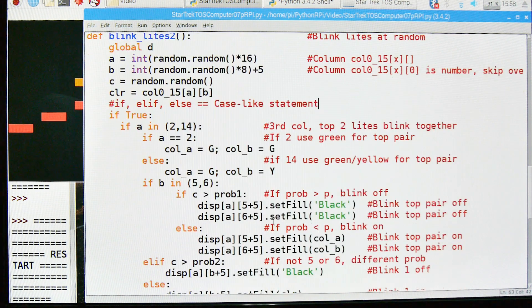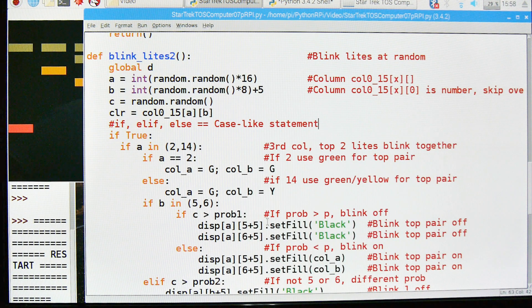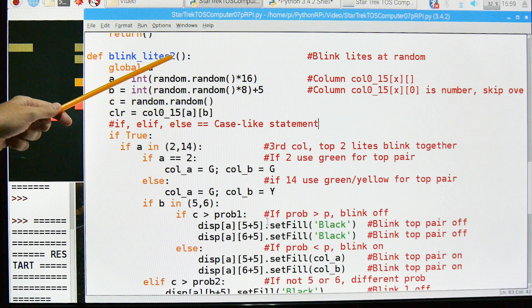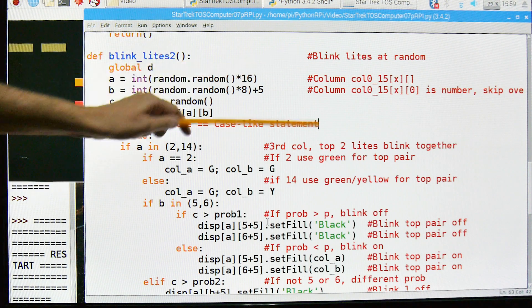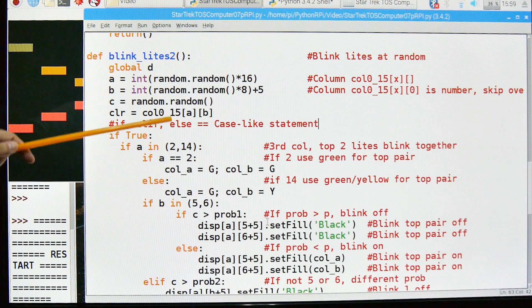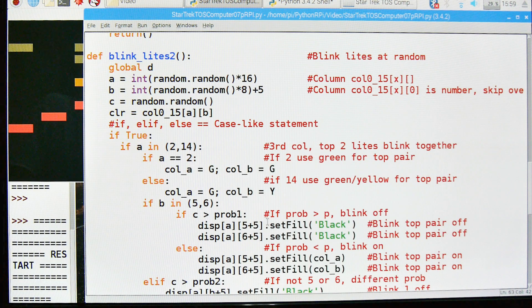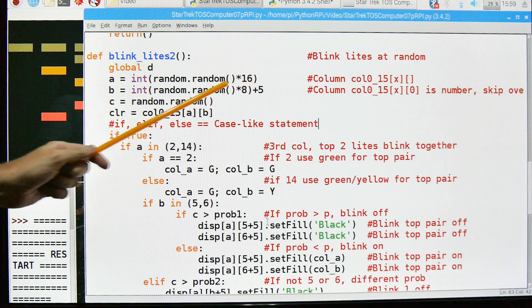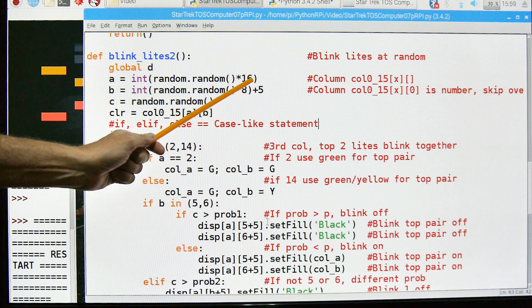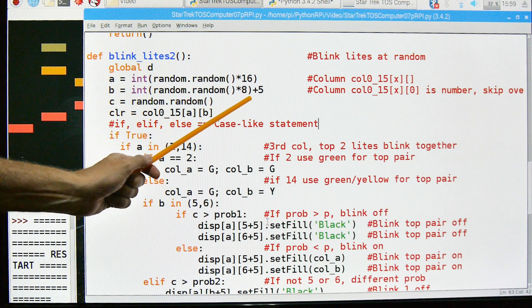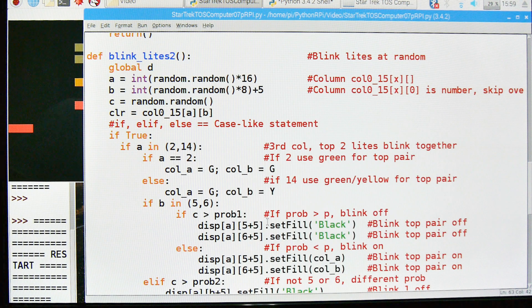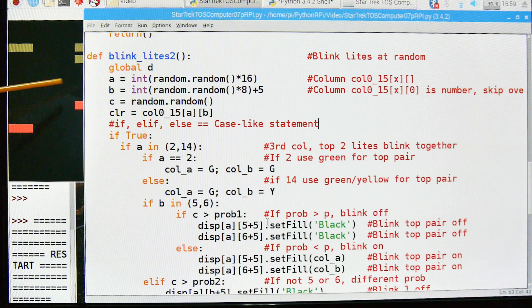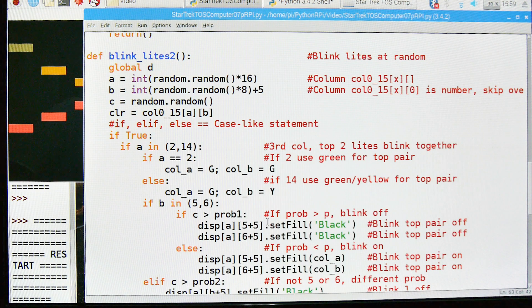This next function is to blink the lights. And you can see the number 2 here. That's because they had to go through two iterations of this thing to get it right. And it was a bear. But we're going to blink these at random. Here's that global variable D that we're going to use for the last three. The right side vertical lights. And here's where we're going to do a randomization. And we're going to get the random out of the columns.